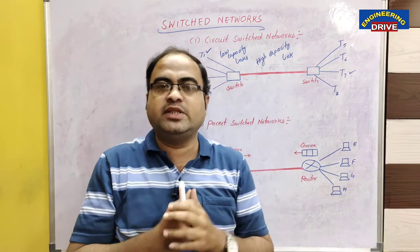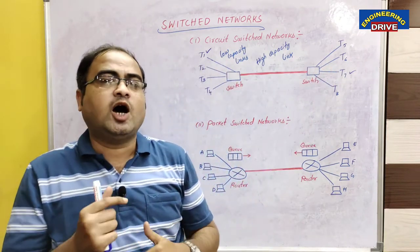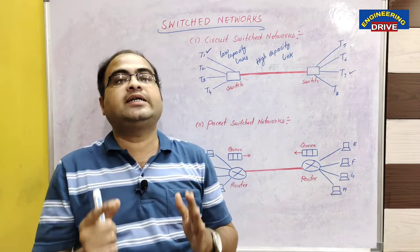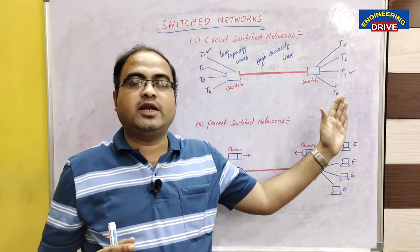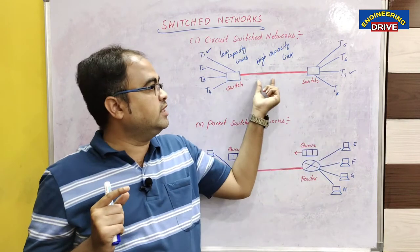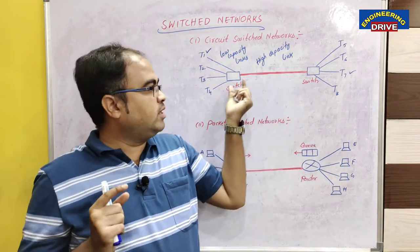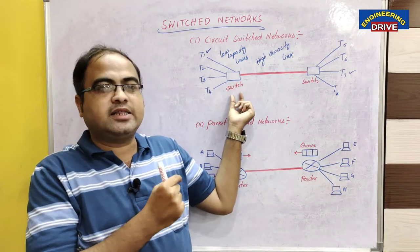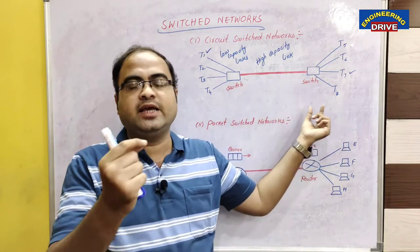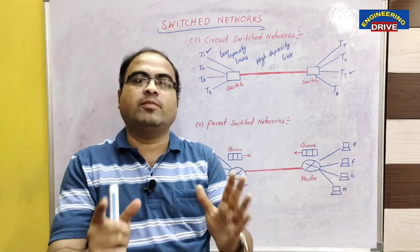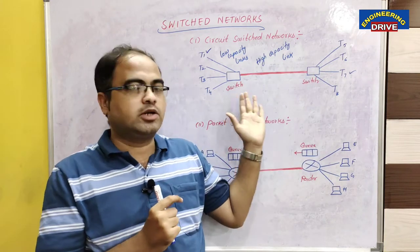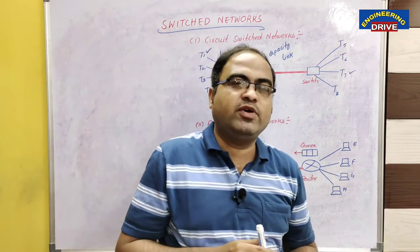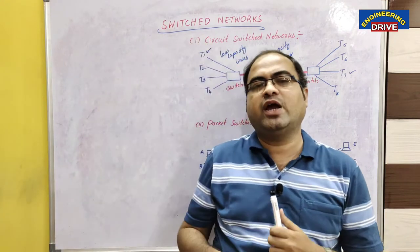In this way, T1 and T7 communicate with each other. At a time, four pairs of telephones can communicate using this high capacity link. So the purpose of switches in a circuit switch network is to select the appropriate telephone at the receiver side and enable communication. At present we use computers, smartphones, and laptops, so in these circumstances packet switch networks are preferred.